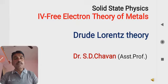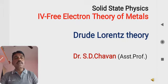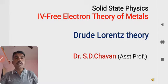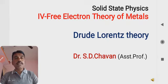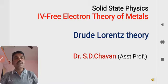Drude first suggested his assumptions, and then afterwards Lorentz worked on Drude's theory. He used Drude's parameters for calculations and logical conclusions, building upon whatever assumptions Drude had made. Let us now see what exactly Drude suggested and what Lorentz suggested, and what their combination — the Drude-Lorentz theory — gives us for the free electron theory of metals.